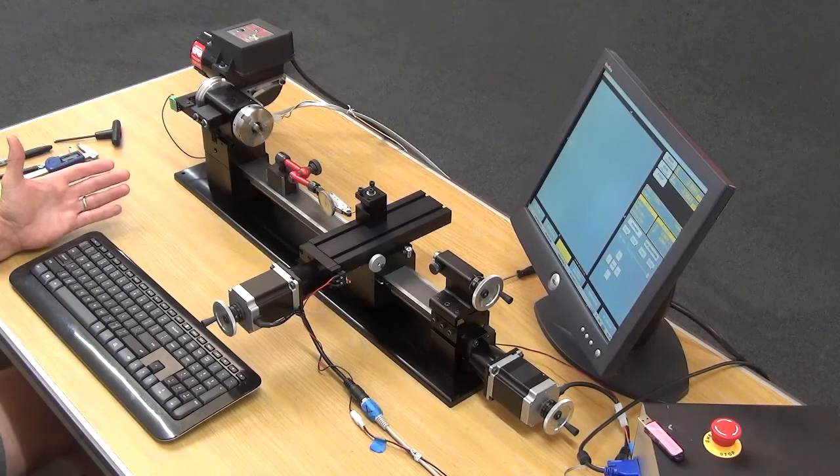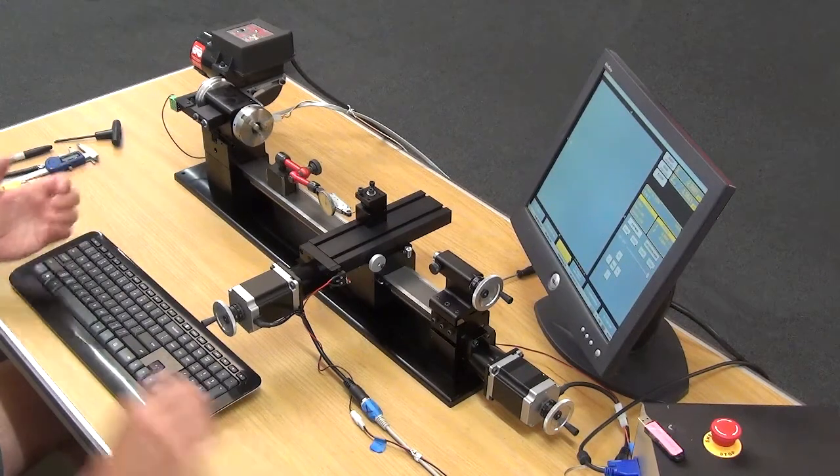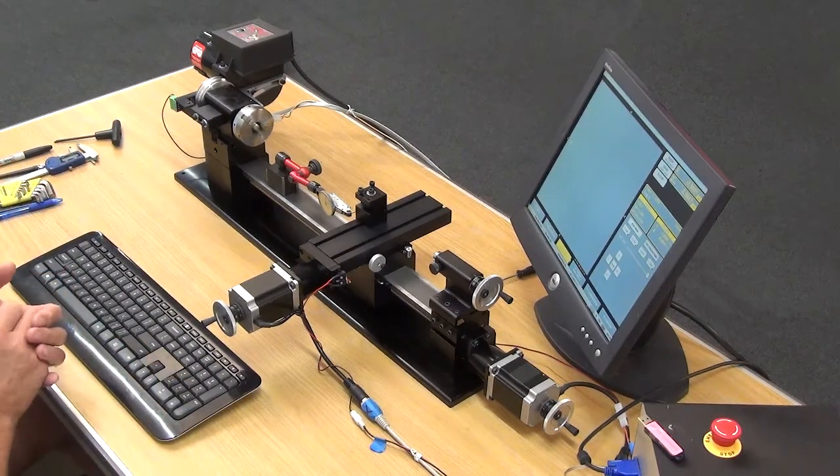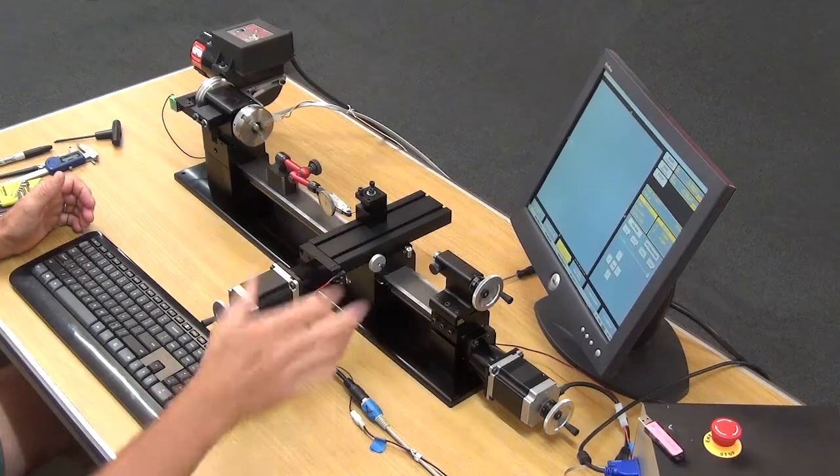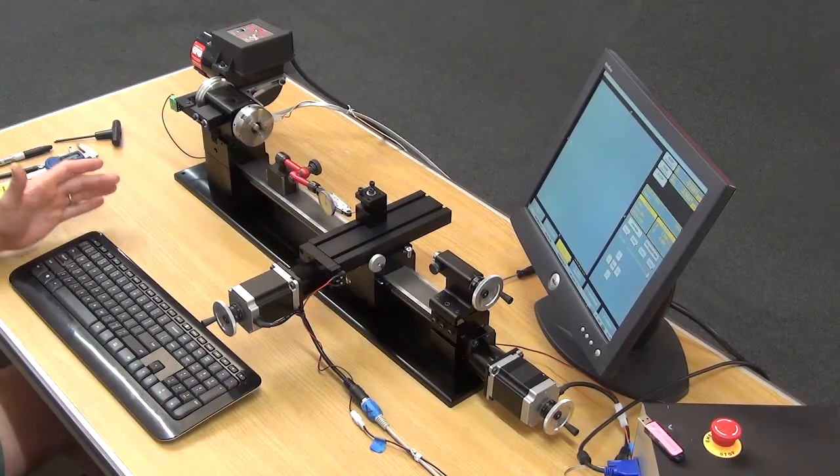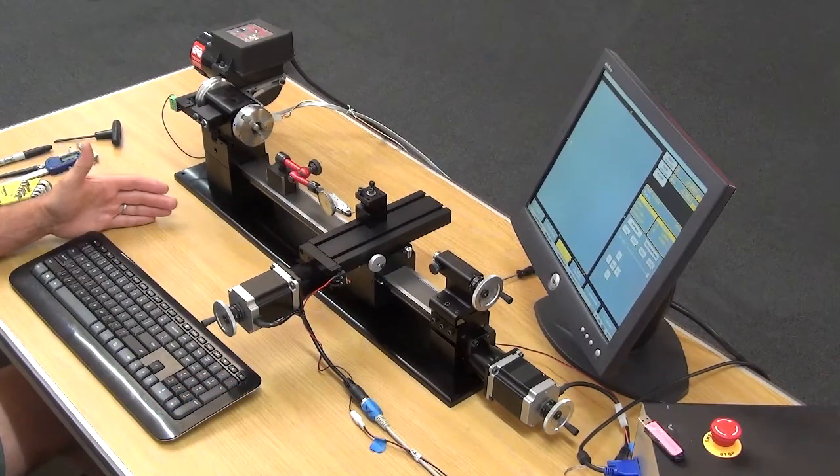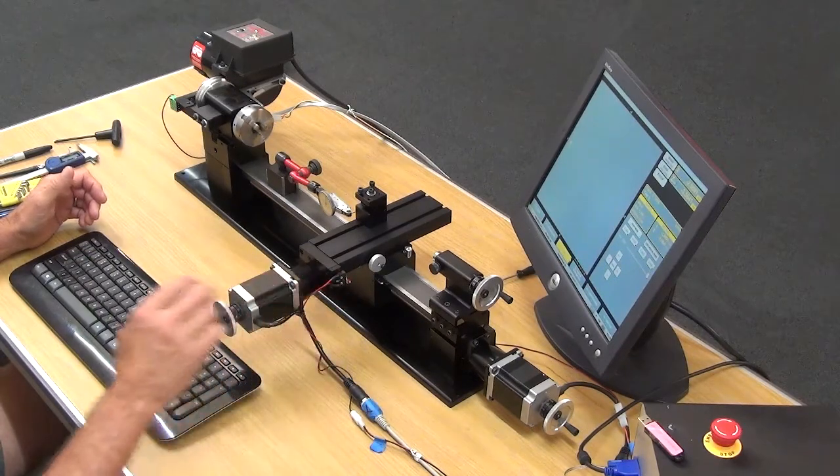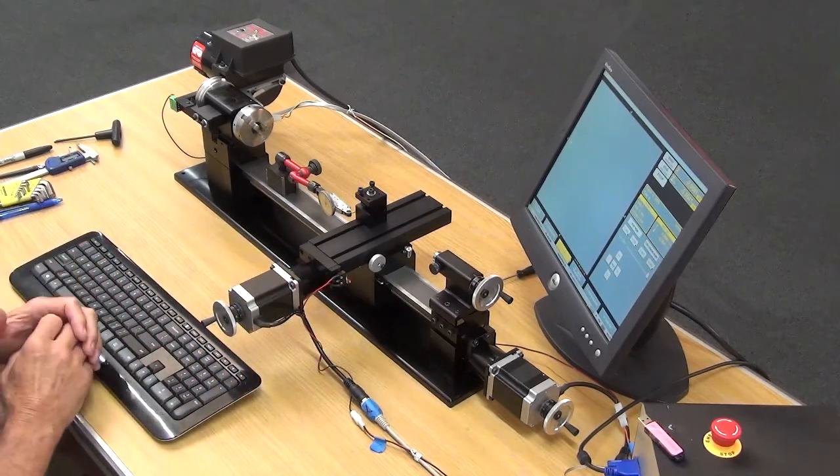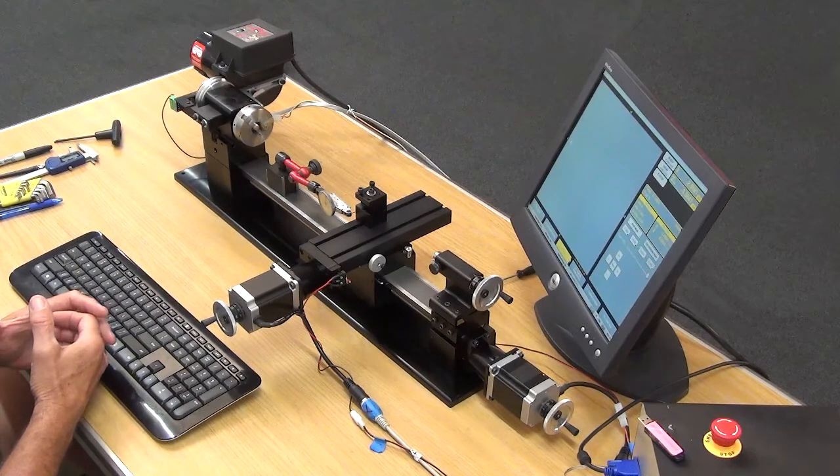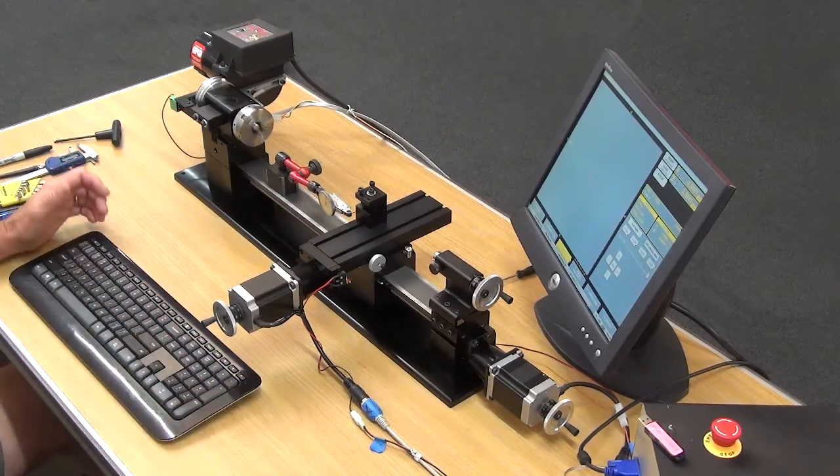When you're checking your backlash you don't want to use your hand pulse generator. You don't want to use the jog. What you want to use is MDI and give it a command to move a specific distance. Whether you're in jog or on the hand pulse generator the amount that it moves in those two modes is not going to be accurate.